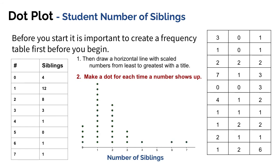Looking at the completed dot plot: I've got four dots for zero, twelve dots for one, eight dots for two, three dots for three, one dot for four, no dots for five, one dot for six, and one dot for seven. I tried to line the dots straight across so it's nice and consistent. It's really easy to see from my dot plot that one was the most common answer and zero was the least common answer.